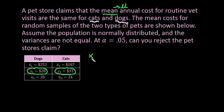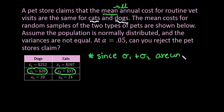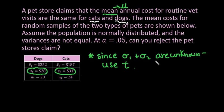Since sigma, which is the population standard deviation, is unknown, we use t. So you use the t-distribution if you don't know the population standard deviations. You use the z or the normal distribution if you know the population standard deviation.